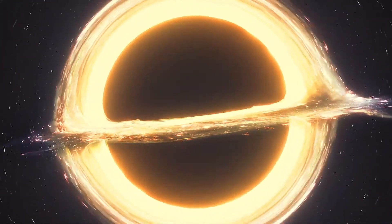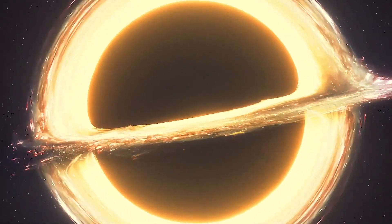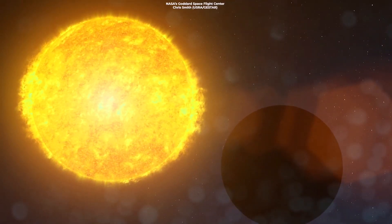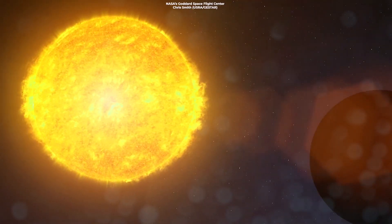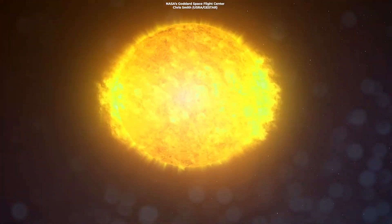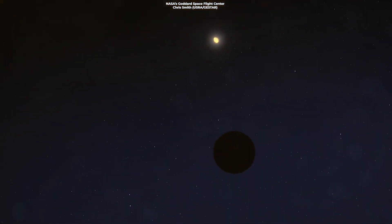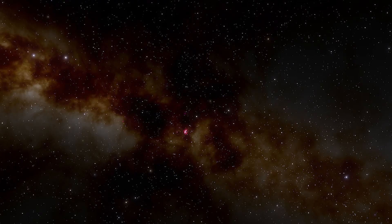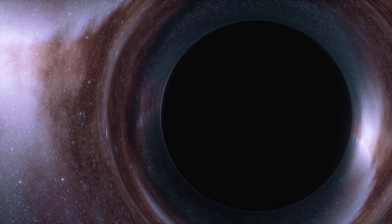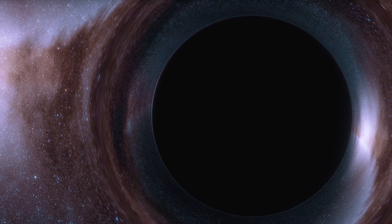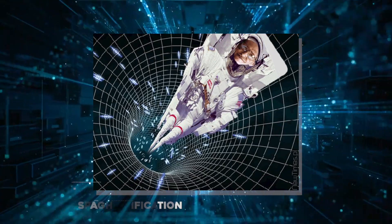Black holes are points in space that are so dense they create deep gravity sinks. Beyond a certain region, not even light can escape the powerful tug of a black hole's gravity. And anything that ventures too close, be it star, planet, or spacecraft, will be stretched and compressed like putty in a theoretical process aptly known as spaghettification.